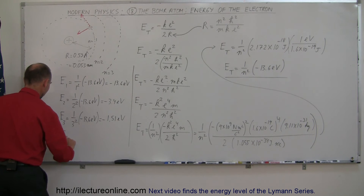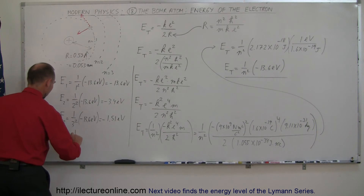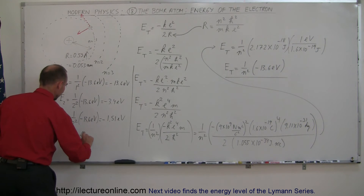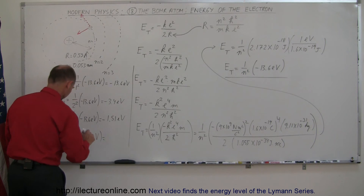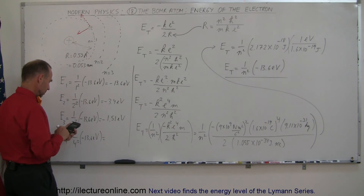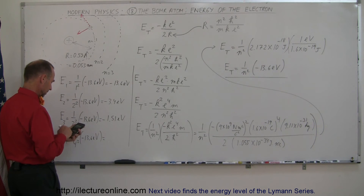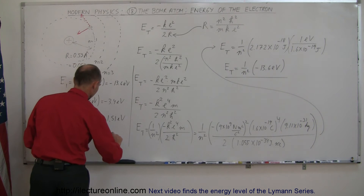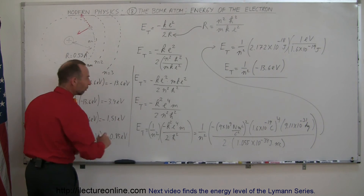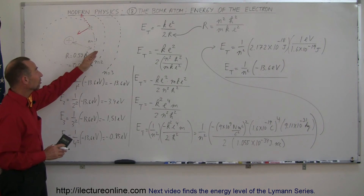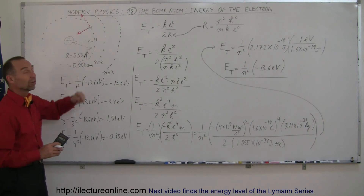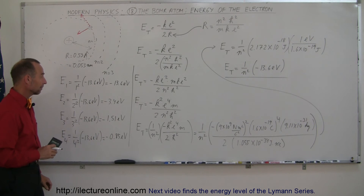And the next level, E4, equals one over four squared times minus 13.6 electron volts. So 13.6 divided by 16 gives minus 0.85 electron volts, and so forth. That is how you find the various energies of the various energy levels in a hydrogen atom.